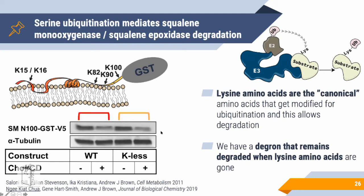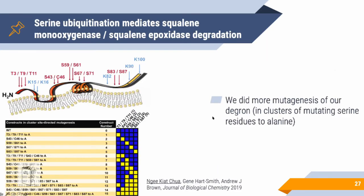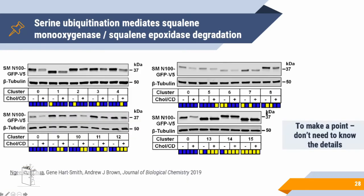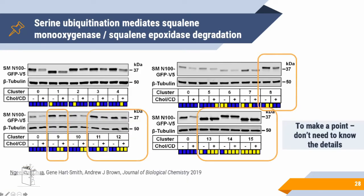It turns out that amino acids like serine, threonine, and cysteine can also be ubiquitinated. We systematically mutated these residues in patches and clusters to find which group is required for degradation. Testing these mutants, we found some that are strongly expressed and no longer degraded when cholesterol is added — unlike wild-type, which is normally degraded under cholesterol treatment.